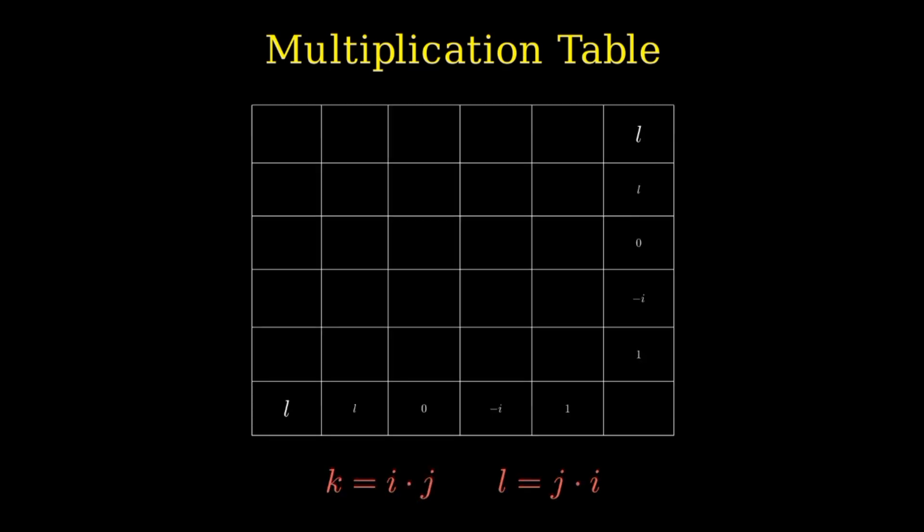Let's break it down with a multiplication table. Here's how each of the five basis elements multiply with each other. We have a table with rows and columns labeled 1, I, J, K, and L, where K equals I times J, and L equals J times I.